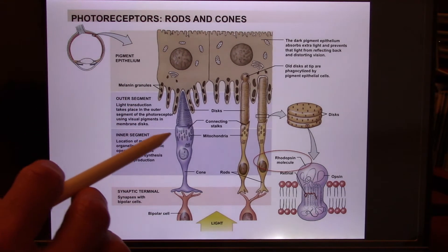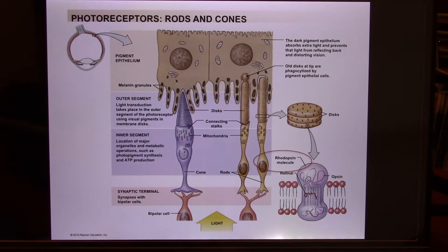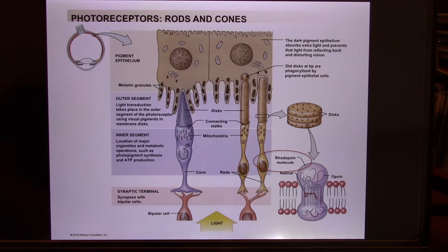The rods and cones have the photopigments, and the signal transduction part is the same concept. The light is going to hit the photopigments, and they're going to transfer them into the second messenger — cyclic AMP or cyclic GMP — and this second messenger is going to open or close some ion channel and trigger the signal transduction. The only difference is the first messenger is the light.